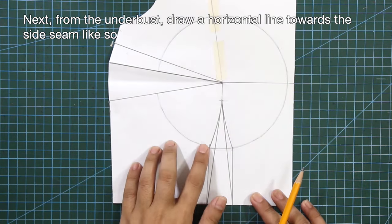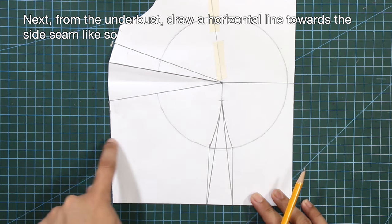Next, from the under bust, draw a horizontal line towards the side seam like so.